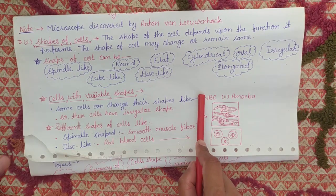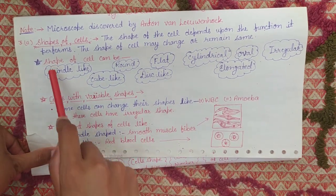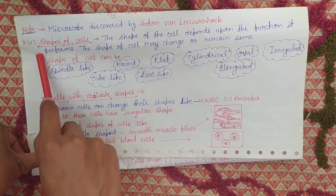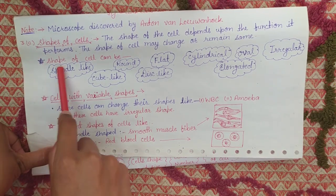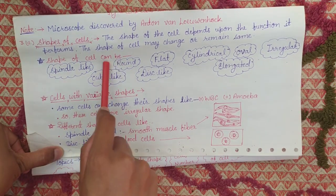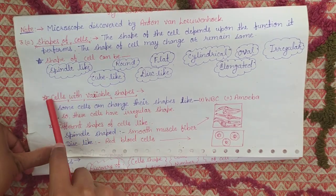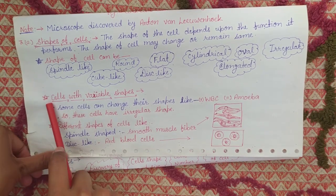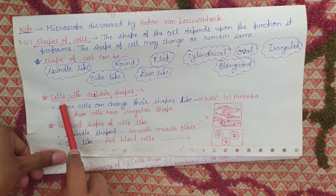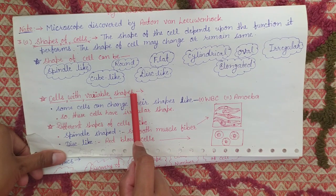So now you will see your next point. The shape of the cell can also be the shape of a star. You will write 'star' next, and ahead of this you have to write 'cells with variable shapes.'